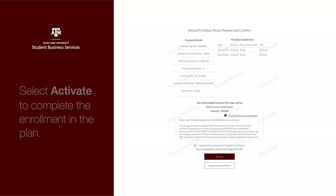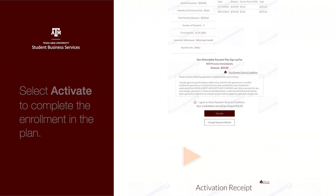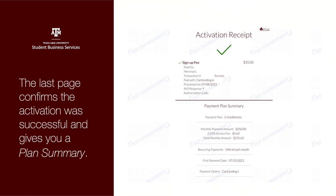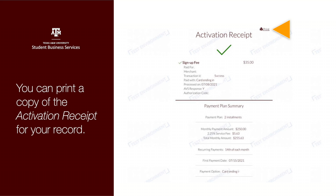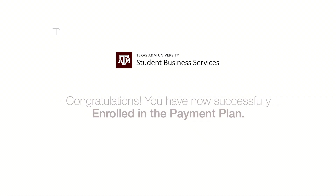Select Activate to complete the enrollment in the plan. The last page confirms the activation was successful and gives you a plan summary. You can print a copy of the activation report for your records. Congratulations, you have now successfully enrolled in the payment plan.